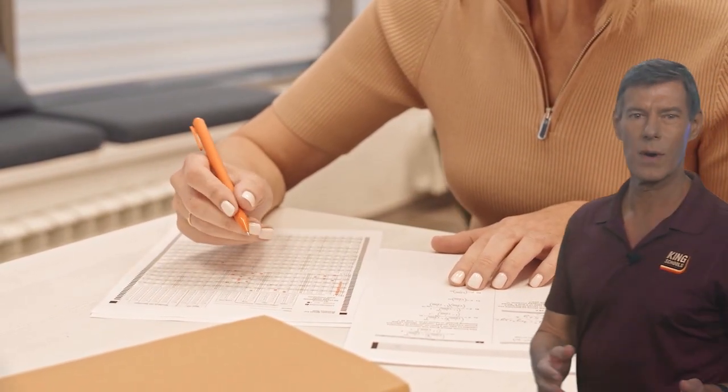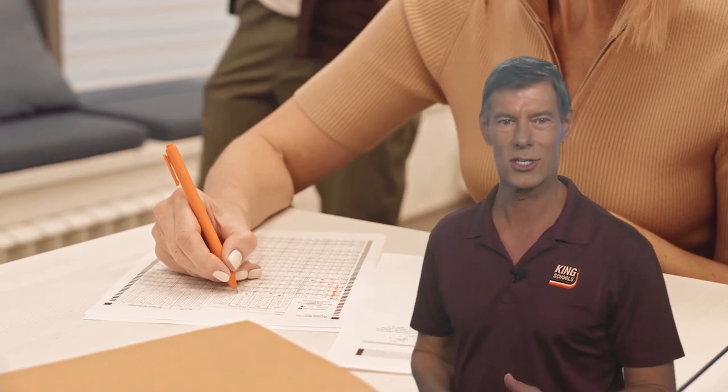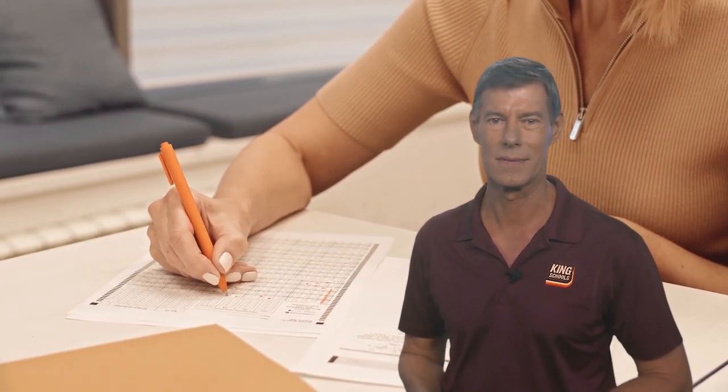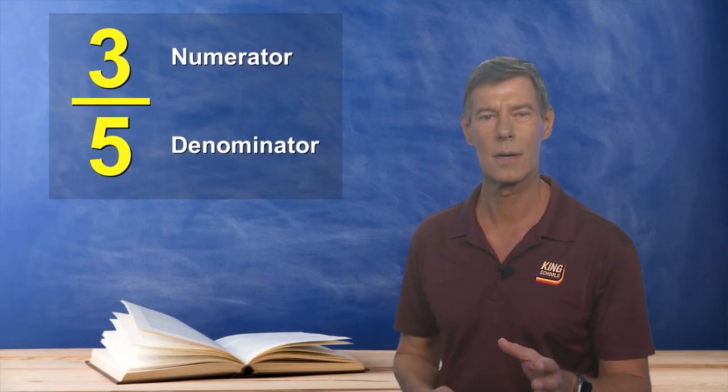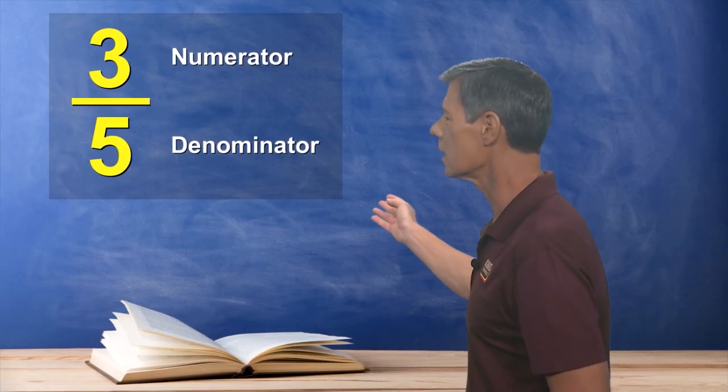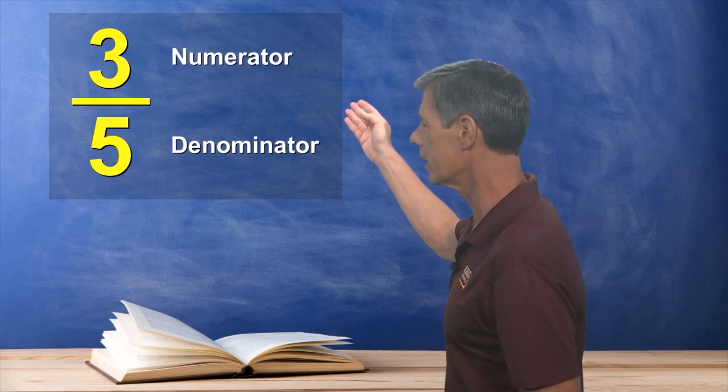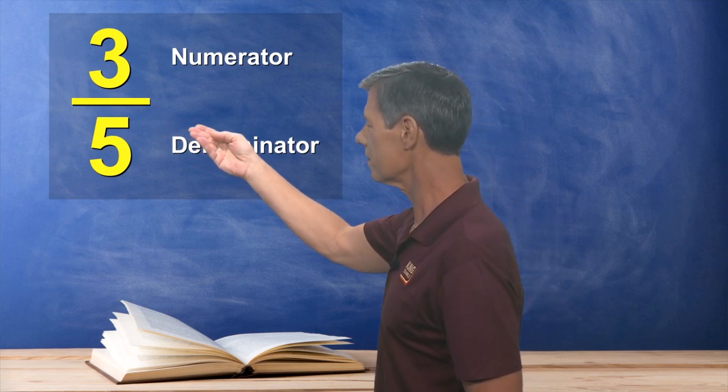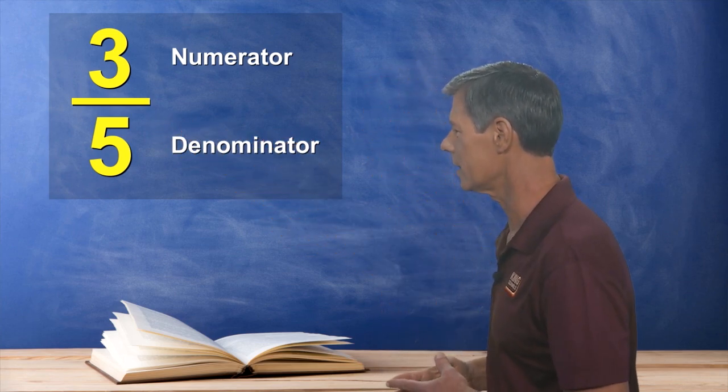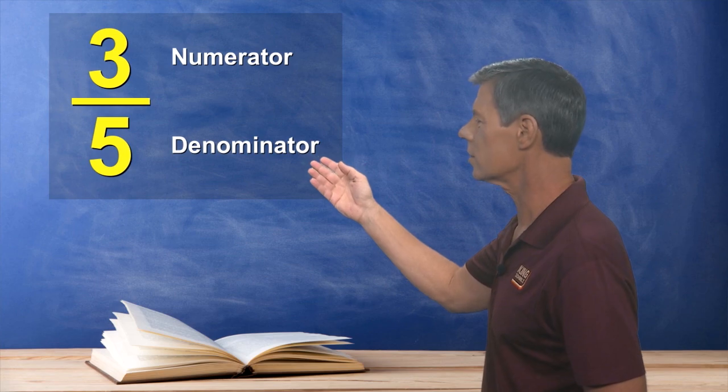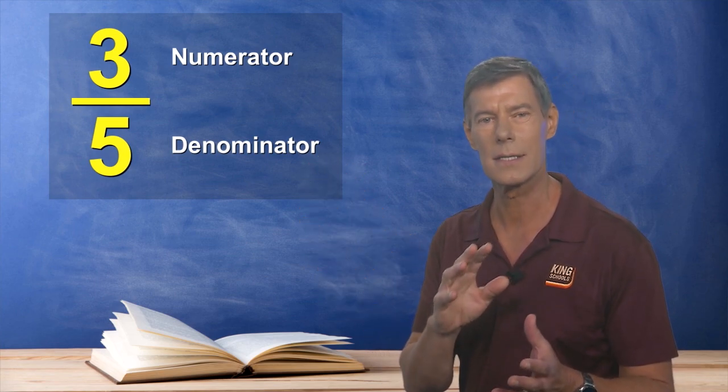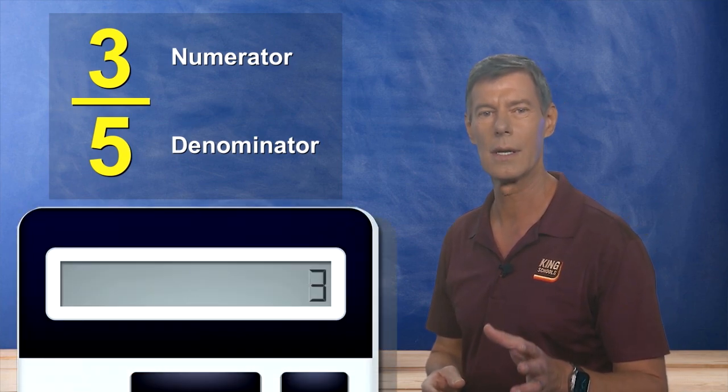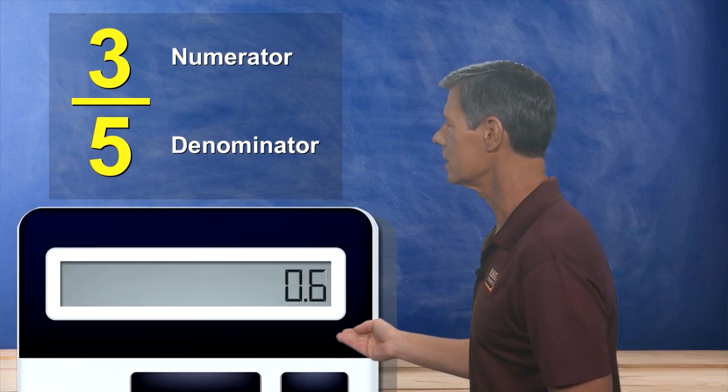Now you might also encounter questions about fractions and decimals on the Knowledge Test. More specifically, how to convert between fractions and decimals. Now you might remember that a fraction is a number written in the form seen here, where you have a number on top called the numerator and one on the bottom called the denominator. And this bar here is the fraction bar, which shows you division is taking place. So to convert a fraction into a decimal, you simply divide the top number by the bottom number. In this example, you would divide 3 by 5 in order to get 0.6.